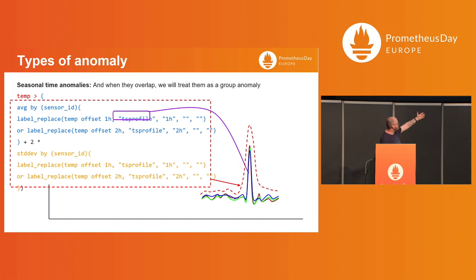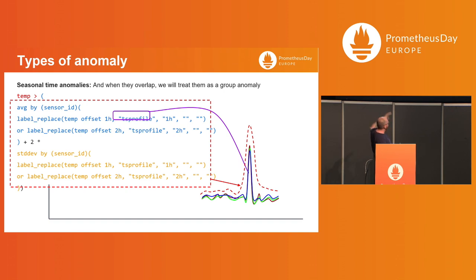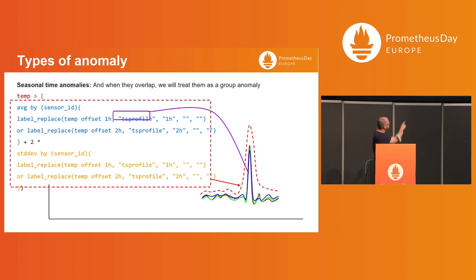I have a group anomaly detection like we saw before. So I can say: if I take the average of the previous seasons plus twice the standard deviation, I'm setting up the red limit that you are seeing there.